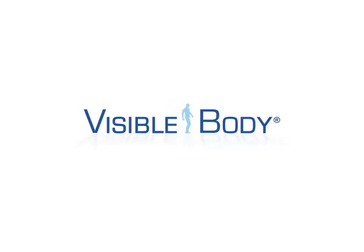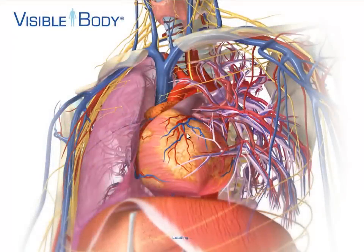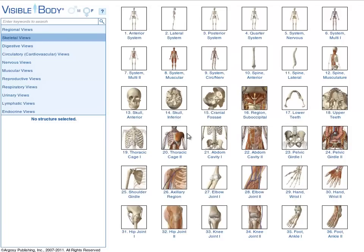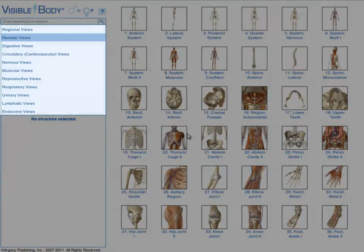Visible Body is a fully interactive 3D anatomy tool that is revolutionizing the study of human anatomy. This video will take a closer look at the main menu, navigation, and commonly used features.